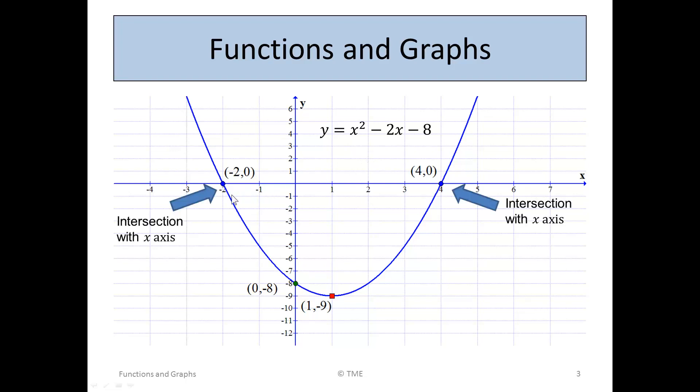Well, first off, this graph crosses the x-axis at two points. It intersects with the x-axis at this point, minus 2, 0, and at the point 4, 0.